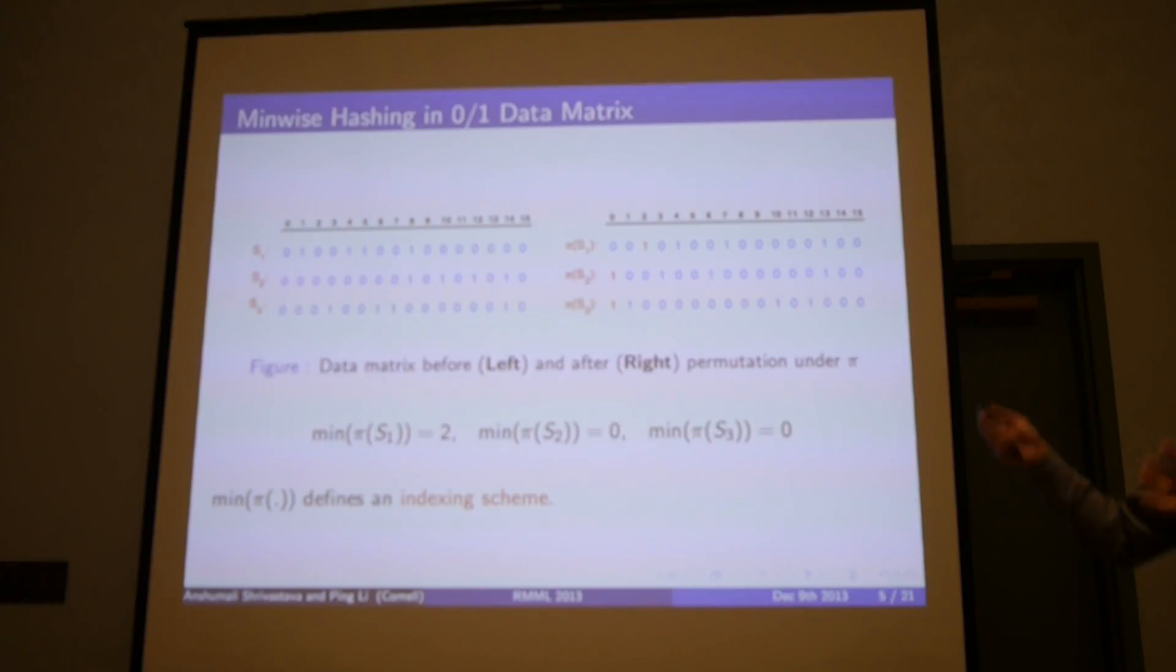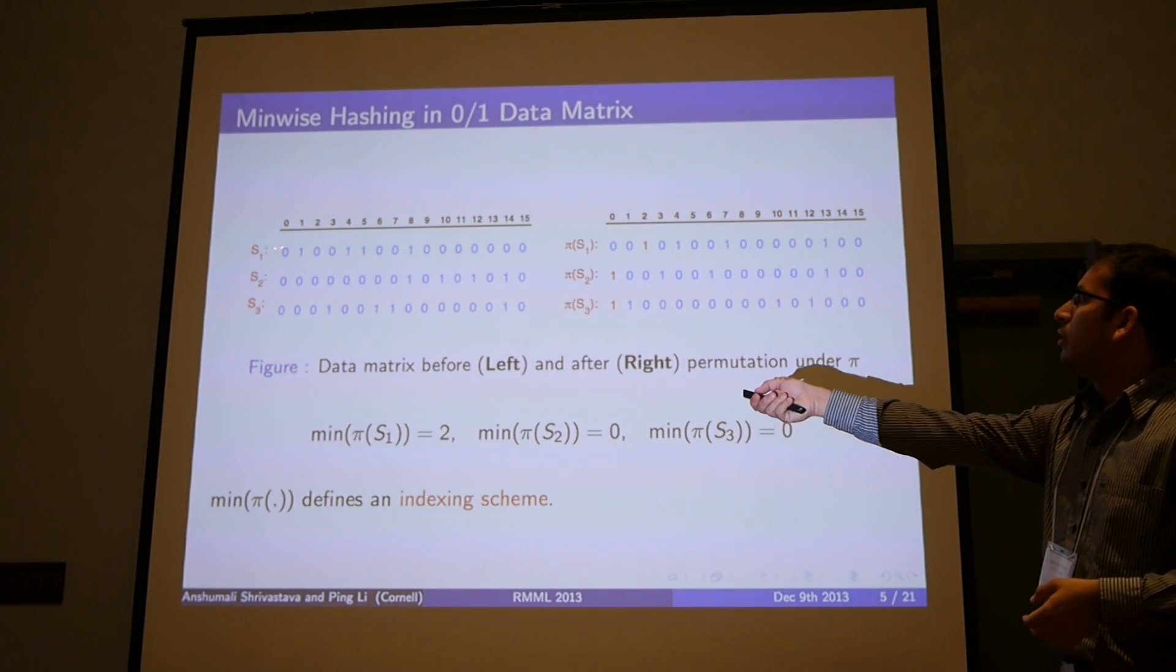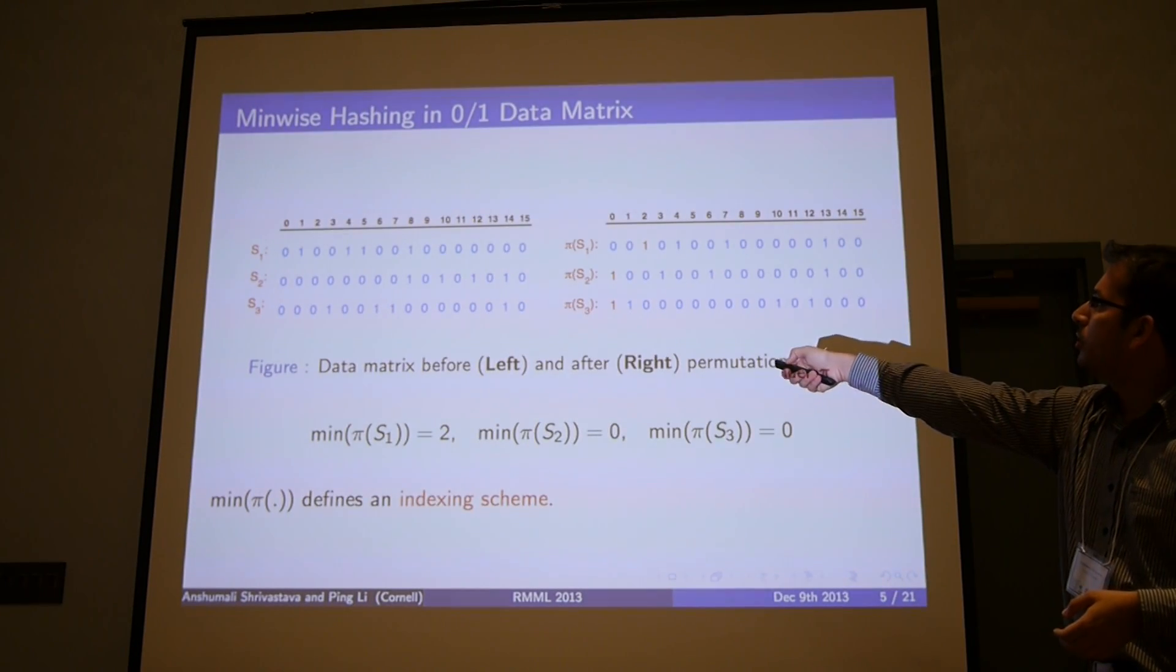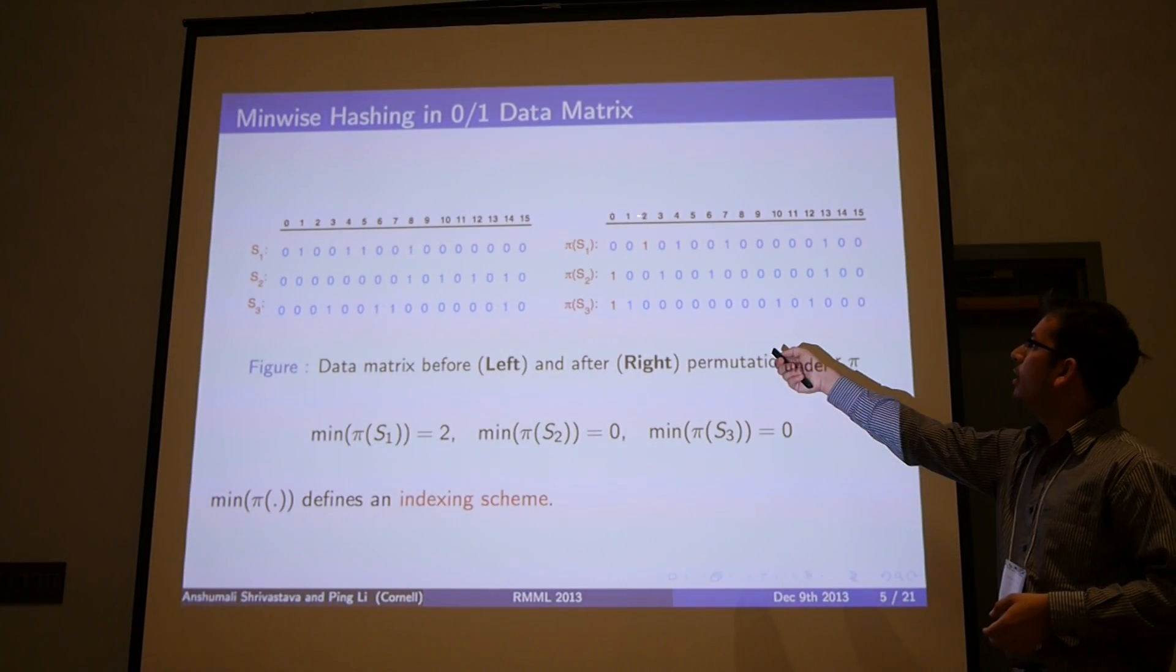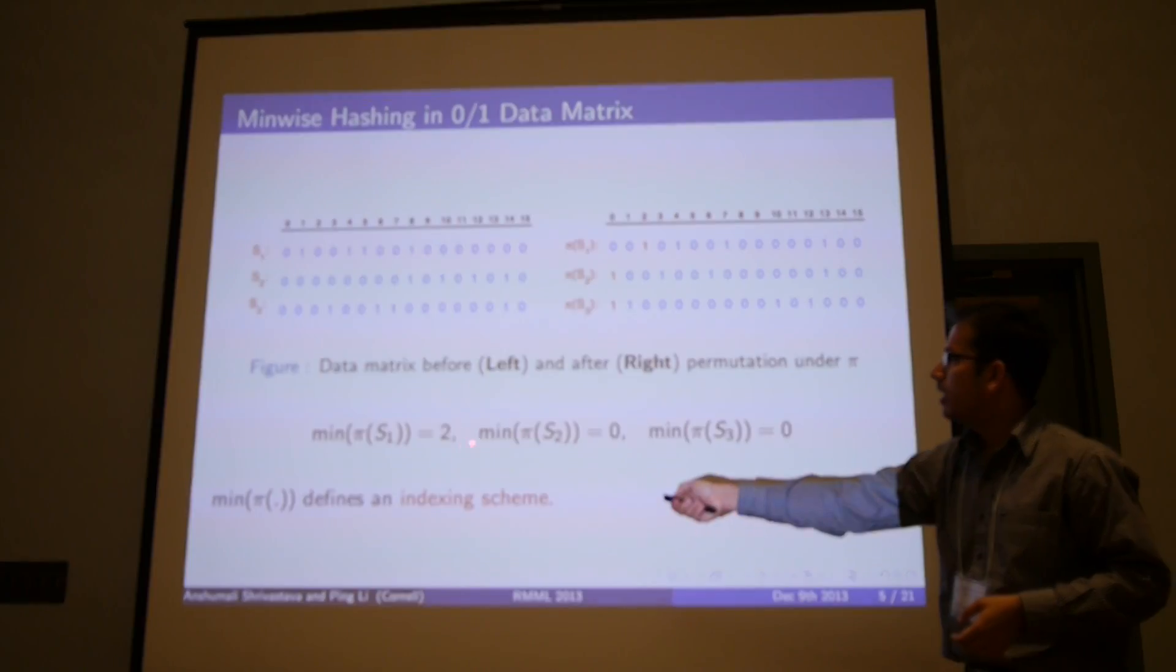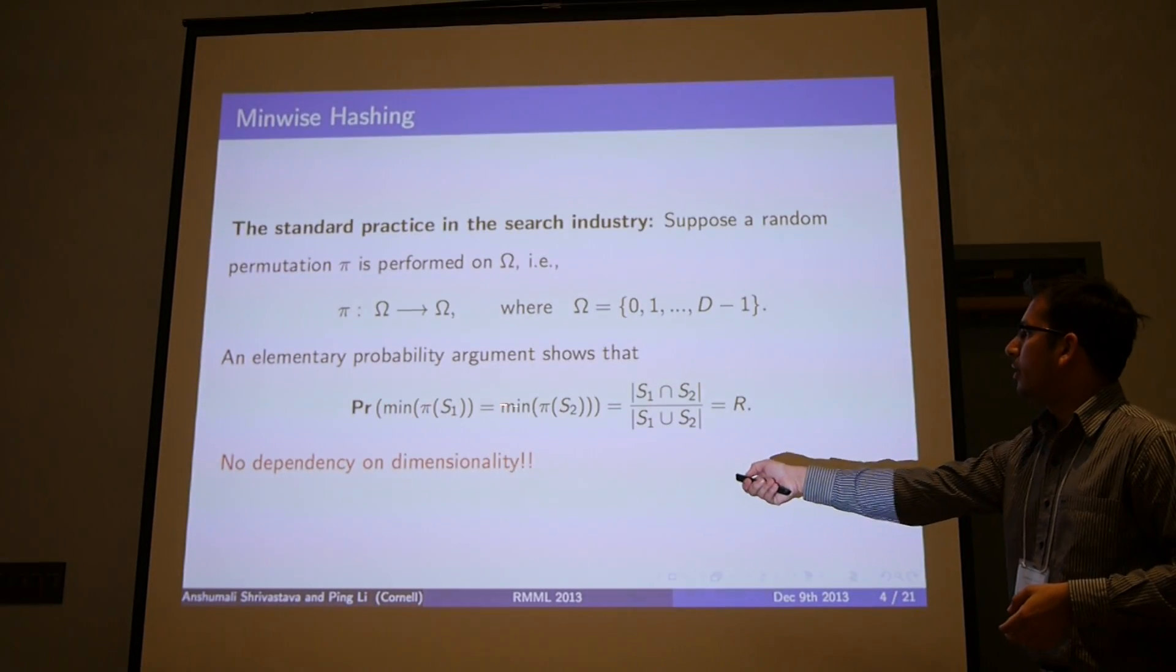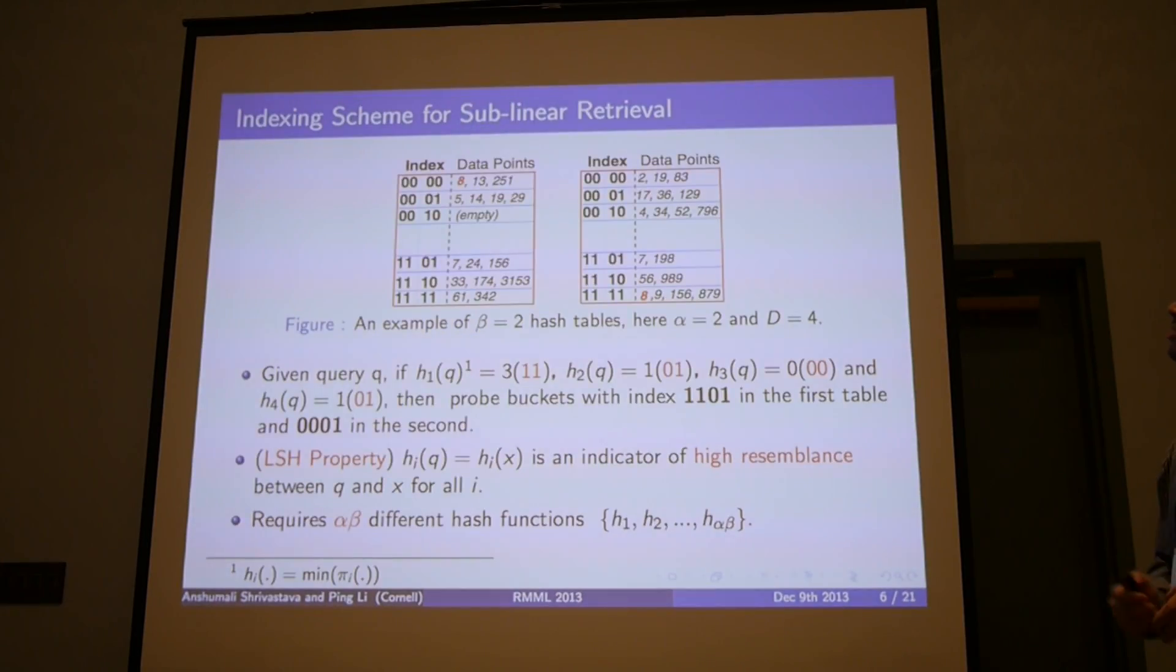Here is another view, the data matrix view of the vectors. I can think of each of the binary vector representations as S1, S2, and S3. This is my data matrix. I apply the permutation over these features and what I get is this permuted set. Then I start from 0 and look at the minimum index of the non-zero element. For example, in S1 the minimum index of non-zero is 2, so my min hash is just 2 for S1. For S2 and S3, this is 0 and 0. From this result we know that the probability that this signature matches is exactly R.